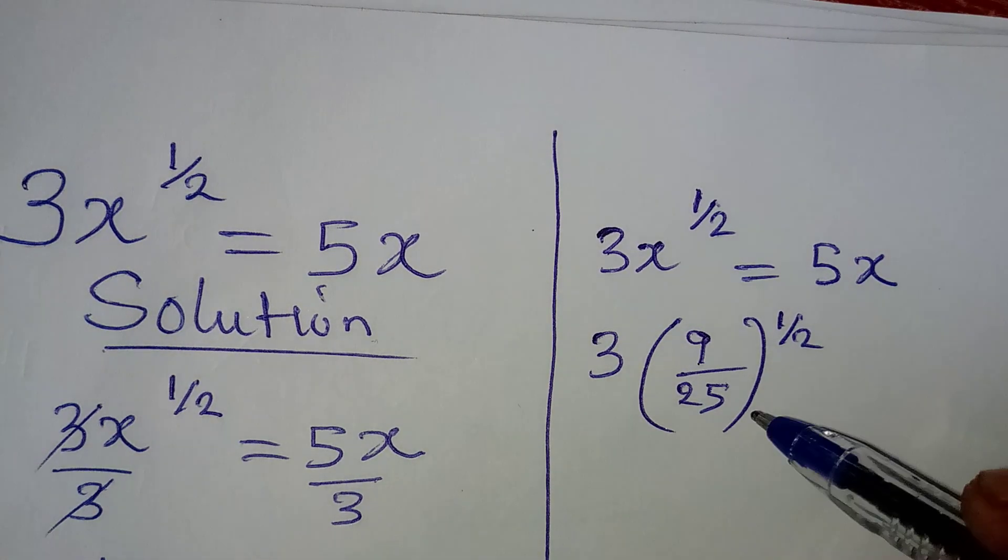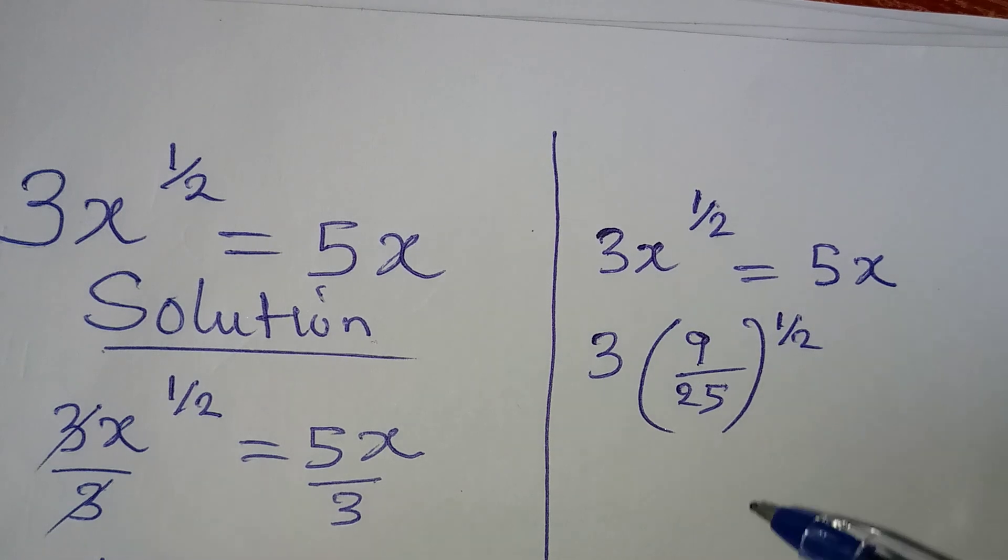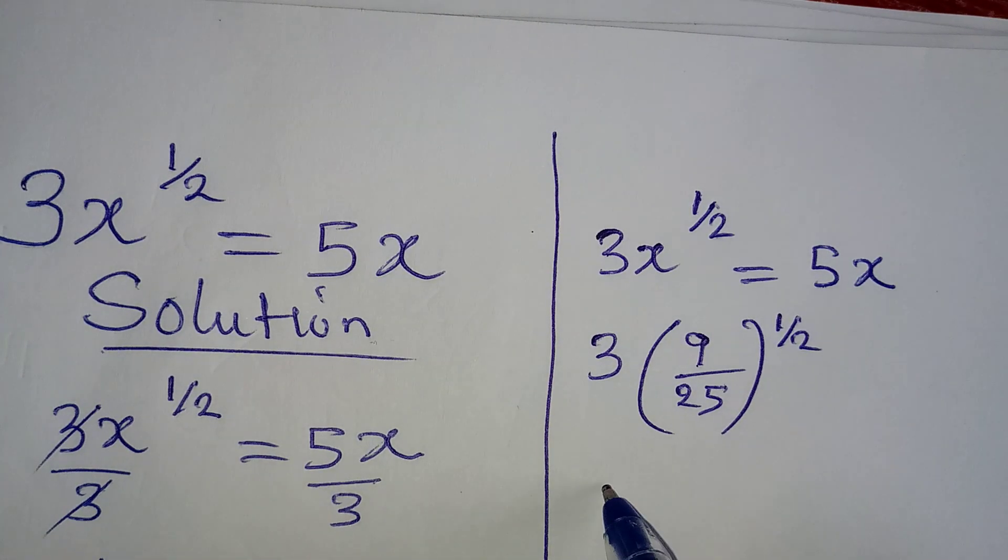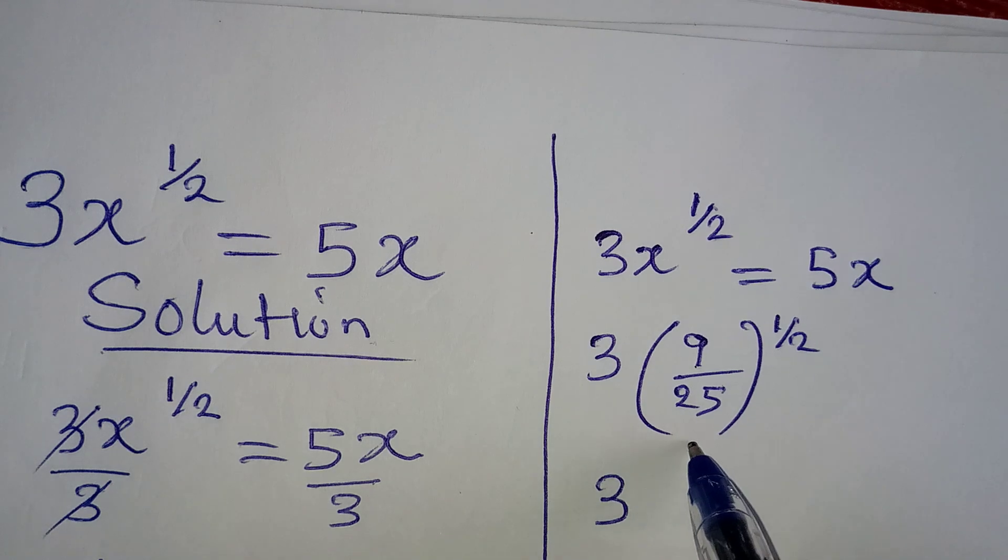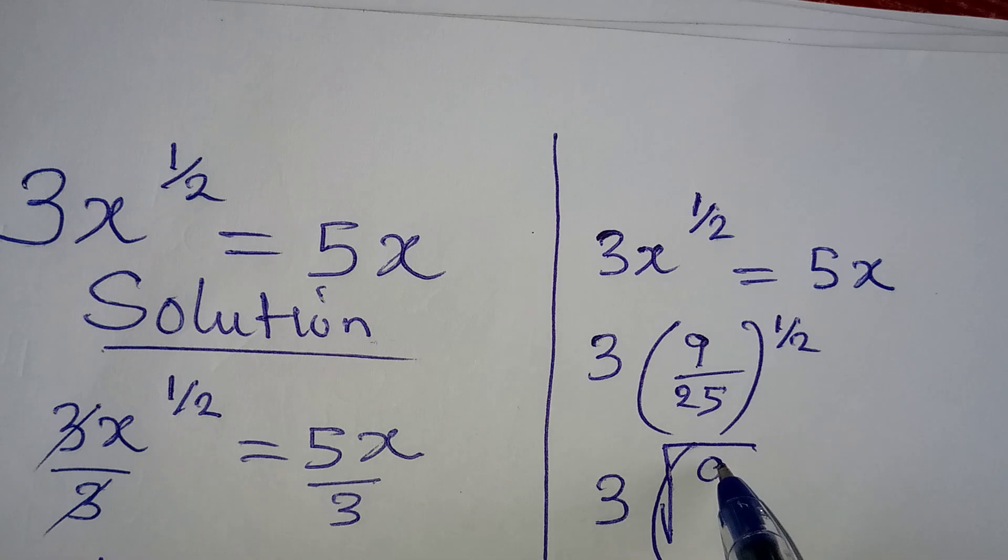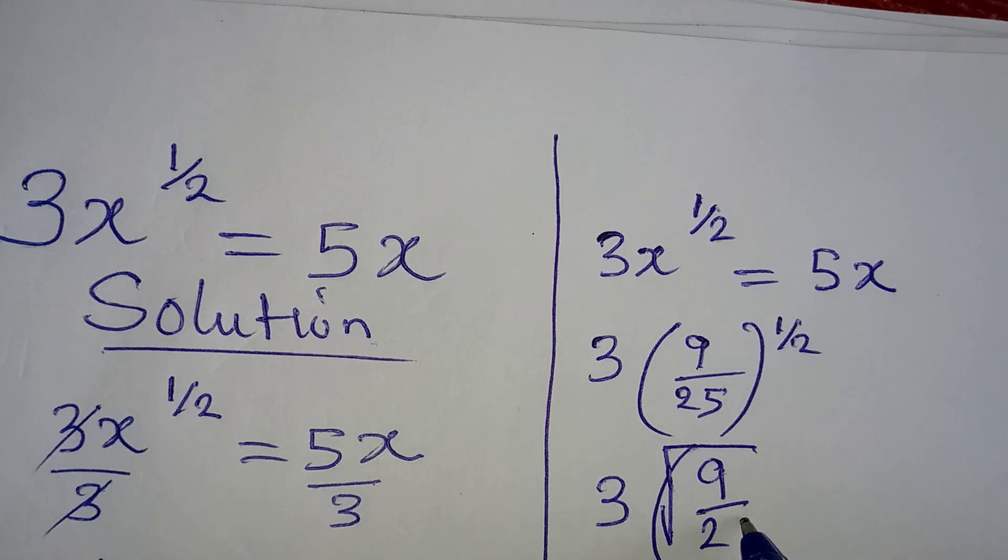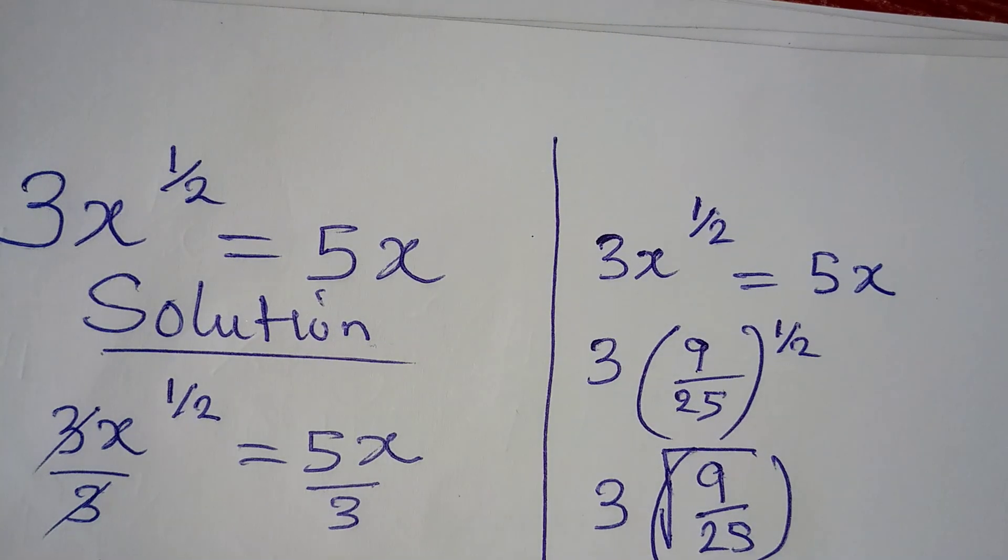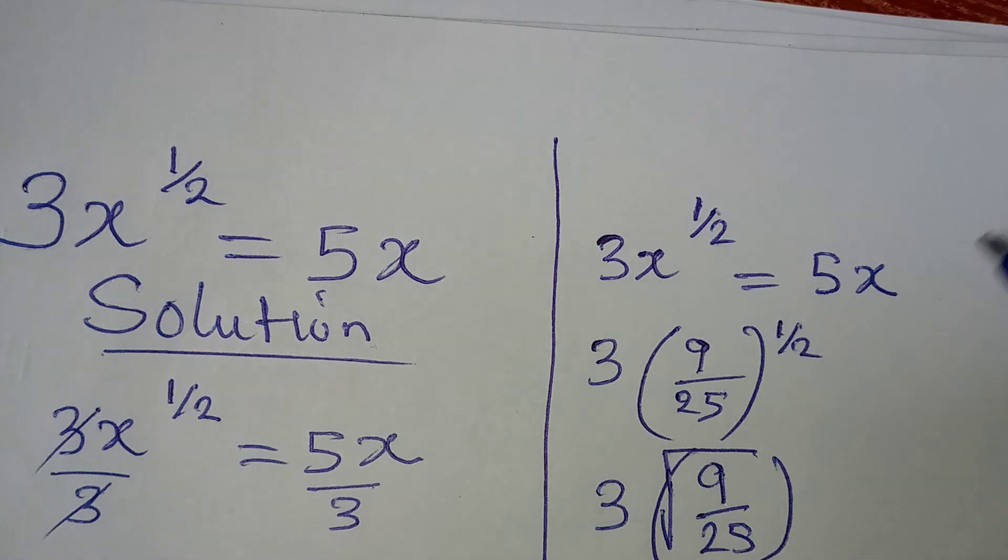Now, any number to the power of 1 over 2 will give you the square root of that number. So we have square root of 9. Let me write square root first. We have square root of 9 over 25. 3 times square root of 9 over 25.